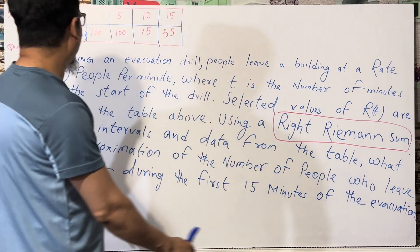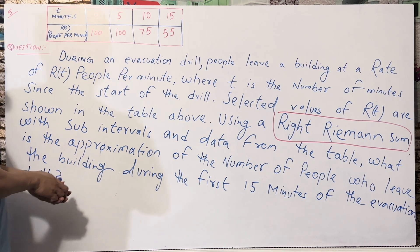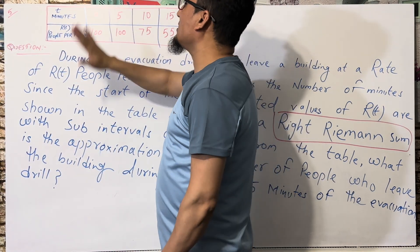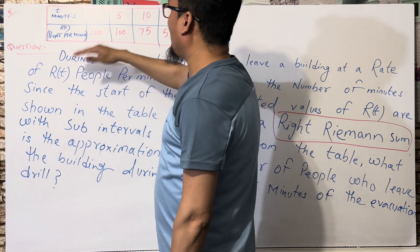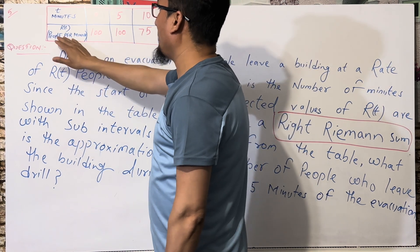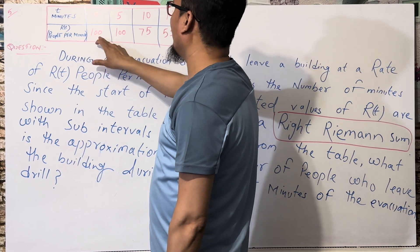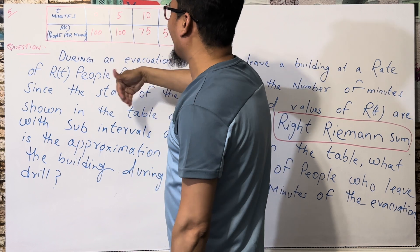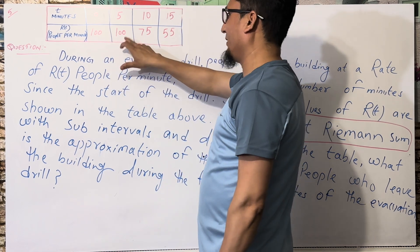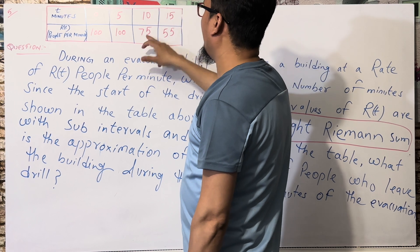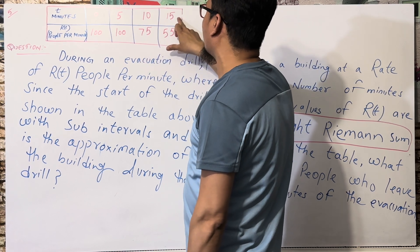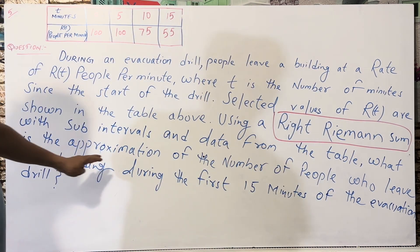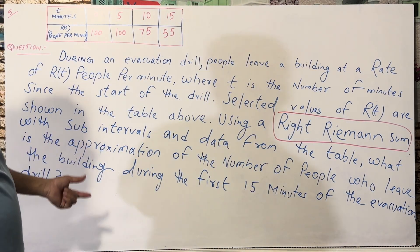So this table is given. The time starts from zero - when time was zero, the rate was 100 people per minute. Then at T equals 5, 10, and 15 minutes, the number of people per minute is decreasing. Before it was 500 - wait, when T is 5 it is 100, after 10 minutes it is 75, and after 15 minutes we have just 55.